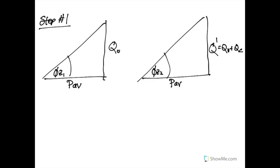Step one is to figure out what our original and new phase angles are going to be. On the left is our original setup with the original reactance, and on the right is our new setup with improved reactance compensated by the new capacitor.